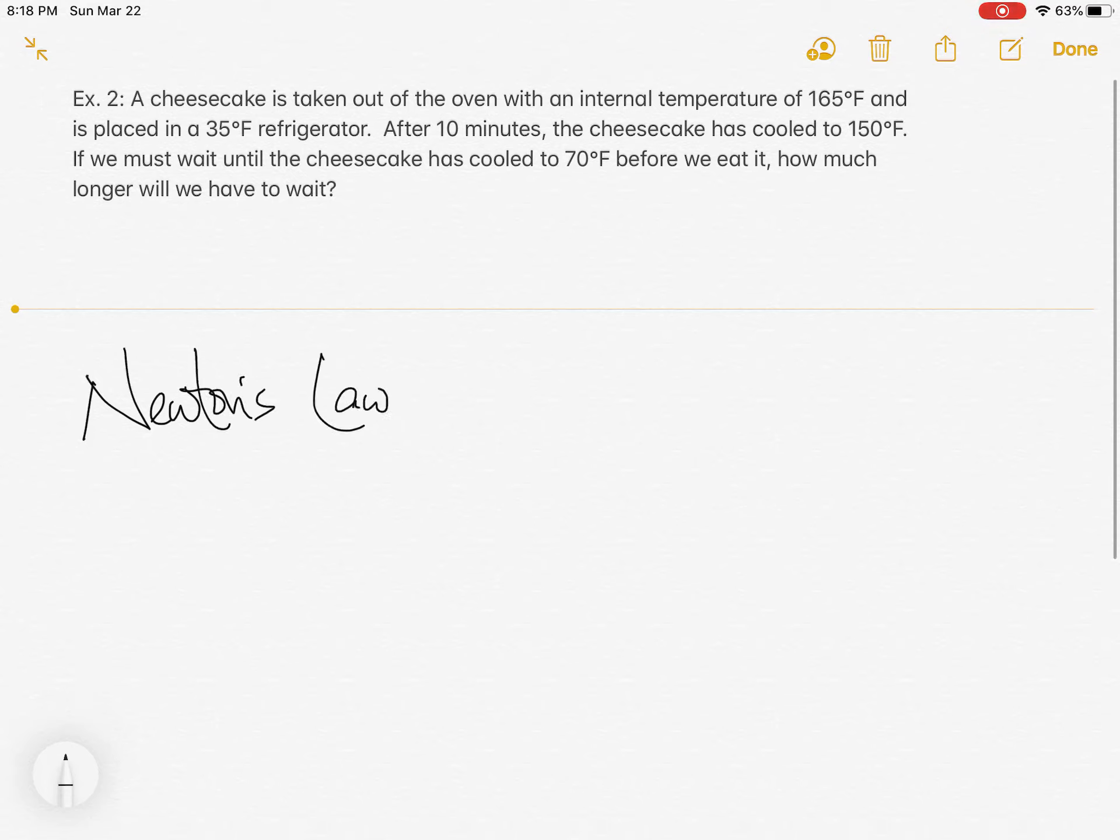Newton's law of cooling. It's a long formula, but we'll talk about what each part means. It is T equals, in parentheses, T sub 0 minus T sub m, close parentheses, e to the negative kt plus T sub m.